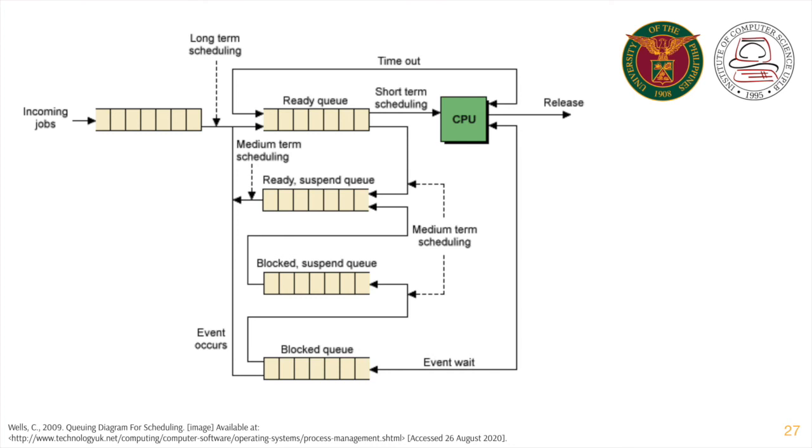Whenever the central processing unit becomes available, a process is dequeued and is run. Whenever a new process arrives, it is added at the end of the queue.